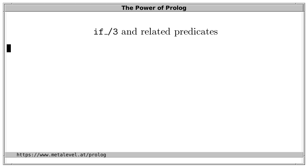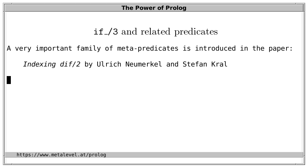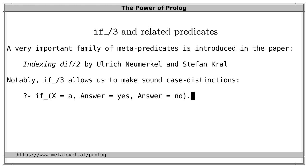Another important metapredicate is if_/3. If_/3 and several related predicates are described in the paper Indexing dif/2 by Ulrich Neumerkel and Stefan Kral. Notably, if_/3 lets us make sound case distinctions. Sound means that the predicate only commits to a branch when it is correct to do so. For instance, we can make a case distinction depending on whether x is equal to a. And in response, we get one solution where x is indeed equal to a. However,